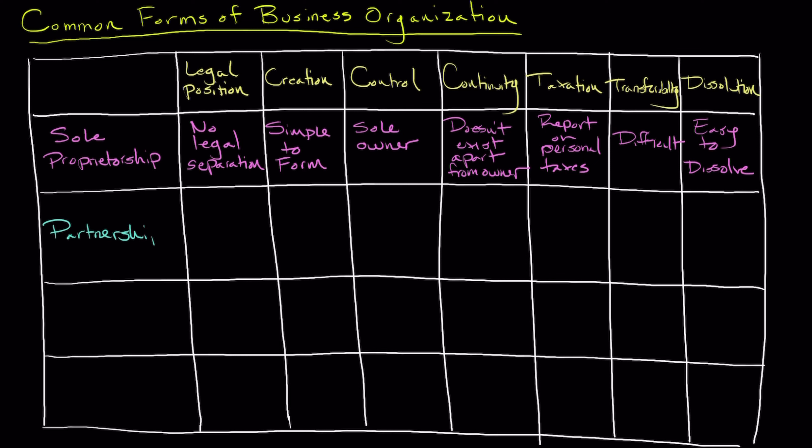Now let's talk about partnerships. There are two main types: general partnerships and limited partnerships. In a general partnership, you and your partner or partners have an equal say in the running of the business, but you're personally liable for any debts or obligations of the partnership. We refer to this as joint and several liability.